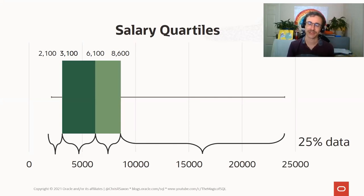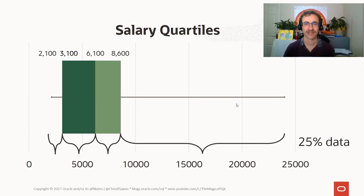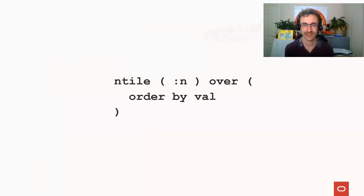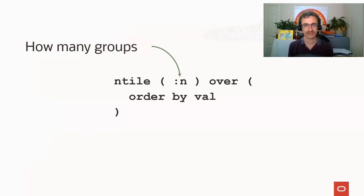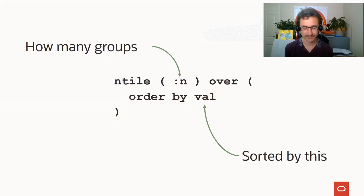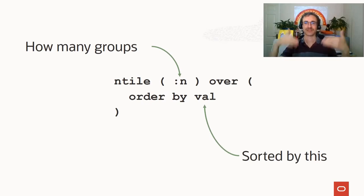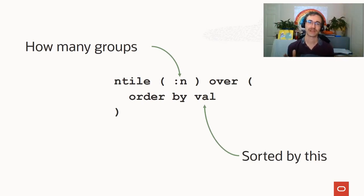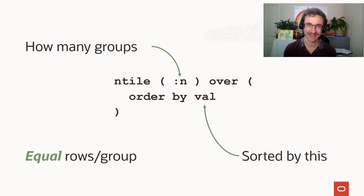We can see three-quarters of people earn less than 8,600, but there's a very big spread in the top 25% - they go up to around 24,000. Most people are clustered in the lower range but there's a big spread at the higher end. To generate this data in SQL we can use the NTILE function. What it does is split the rows up into groups - N is how many groups you want. The ORDER BY says how to sort the data, so for salaries we sort by salary and use four to get bottom 25%, middle 50%, next 25%, and so on.